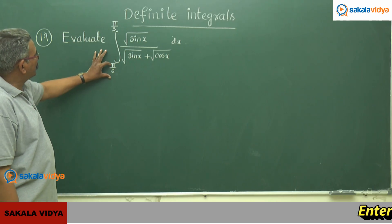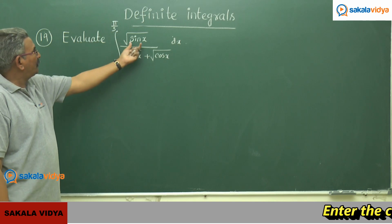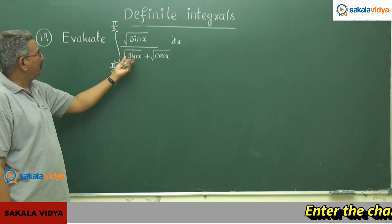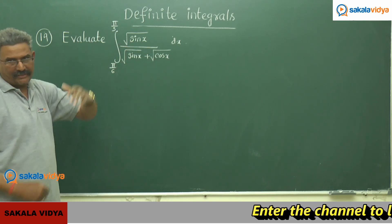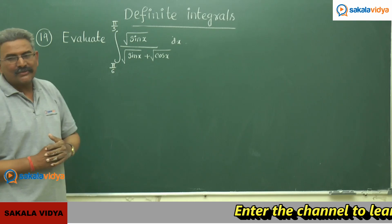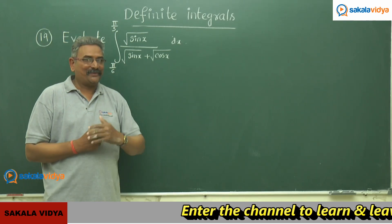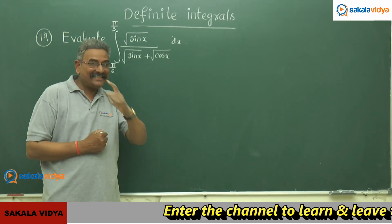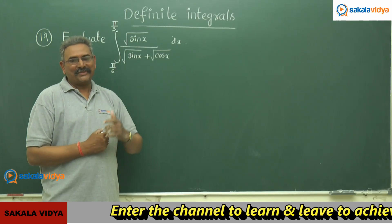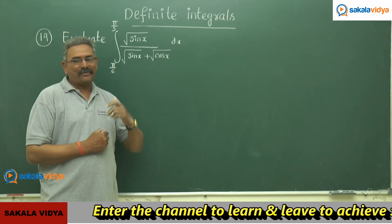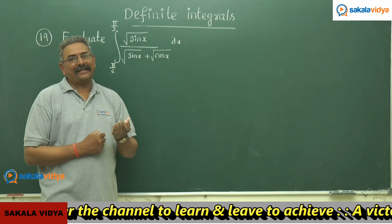Evaluate the integral from π/6 to π/3 of √sinx divided by (√sinx + √cosx) dx. One may be tempted to say the answer is π/4, but that is incorrect in the case of this problem. Another property has to be applied.